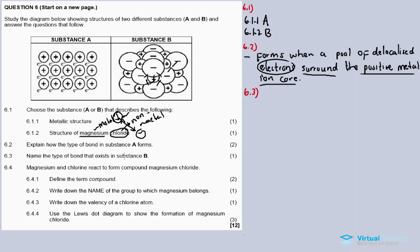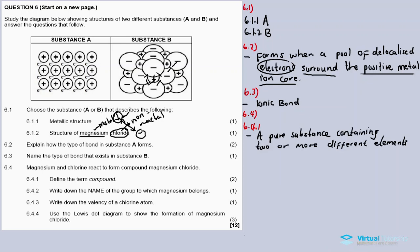Question 6.3 asks for the name of the bond in substance B — the answer is ionic bond. Question 6.4.1 asks us to define the term 'compound'. A compound is a pure substance containing two or more different elements. It is classified as a pure substance, and those elements are chemically combined to form the compound.